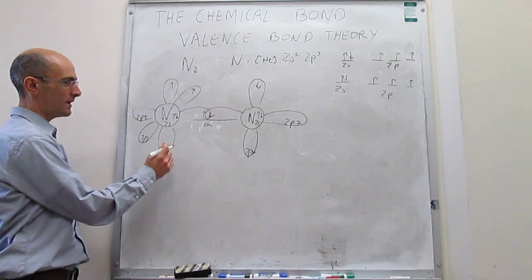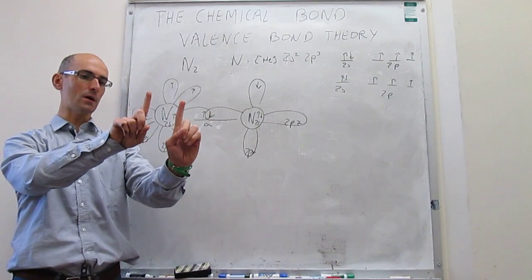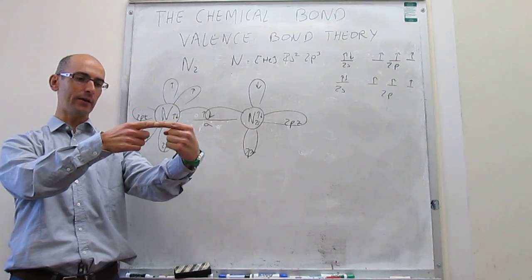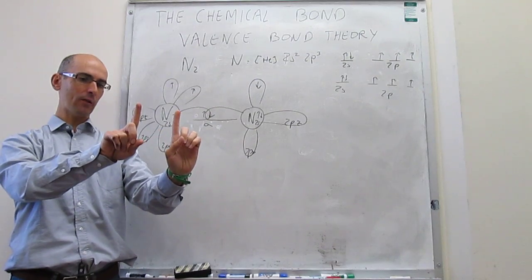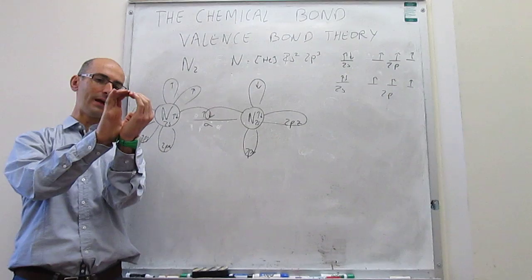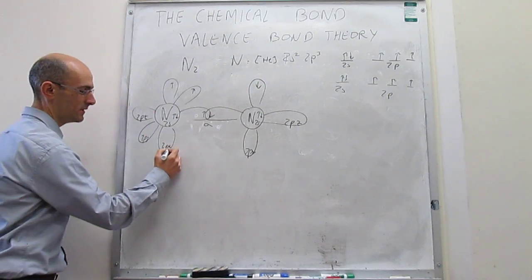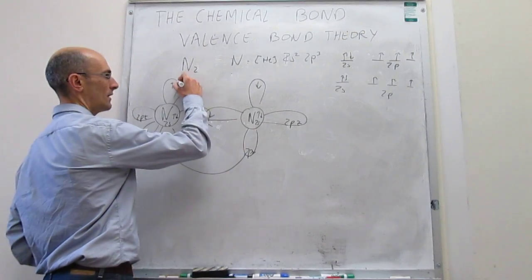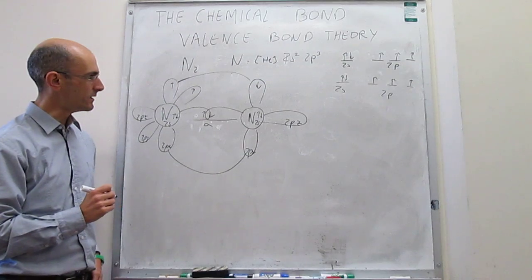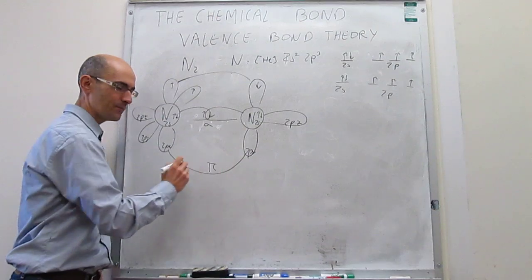So the idea is that now these 2 orbitals are actually pointing in the same direction of space, up and down. Well, we know that they cannot overlap head-on, that's what the 2pz's do, but the question is whether they can overlap side-on and form an overlap that looks like this. That's a possibility. There's a new possibility. Notice that these 2 orbitals can overlap now side-on, not head-on, and that's actually what we call a pi overlap, or a pi bond.